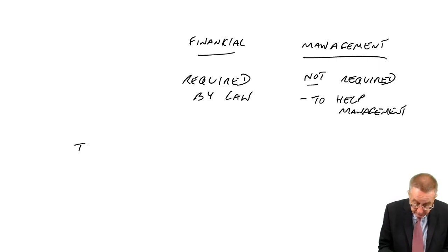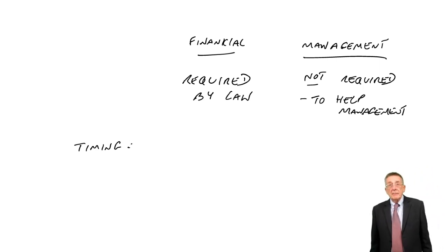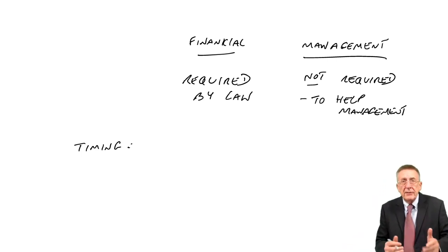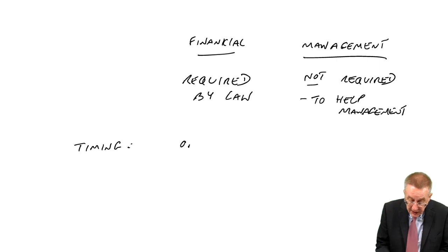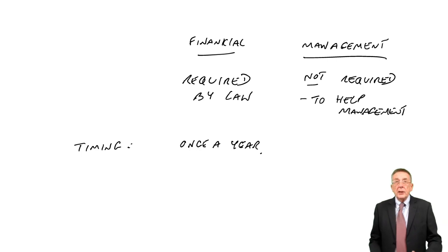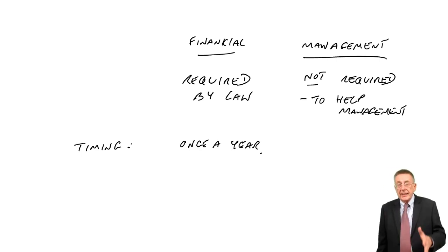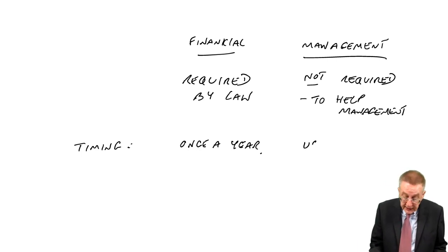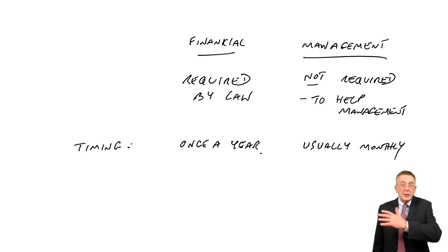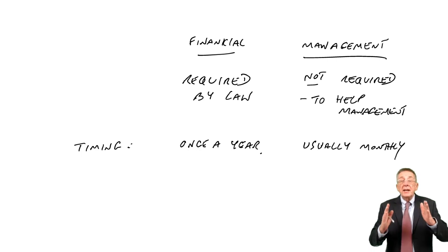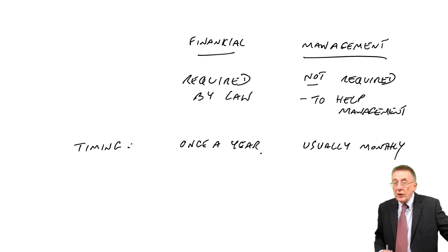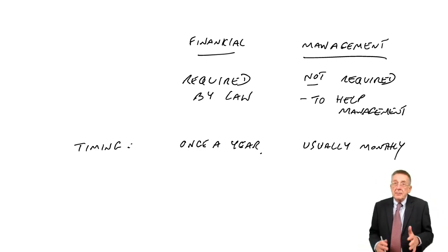On timing: financial accounts must be produced at least once a year — that's a legal requirement. Management accounting has no laws involved; they do it whenever they want. In practice, the management accountant usually produces profit statements every month. It's no use waiting until the end of the year to find out it's been a dreadful year when it's too late to do anything. If they see something going wrong in January, hopefully there's still time to put things right in February and for the rest of the year.